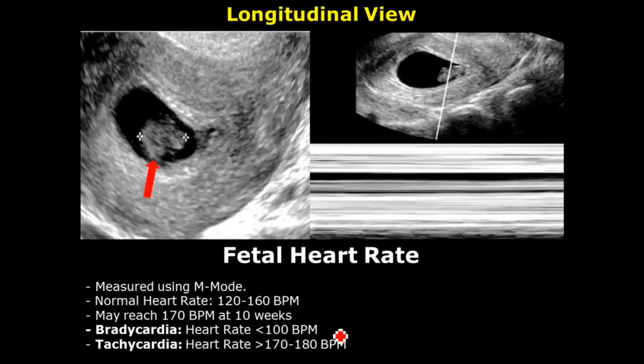Fetal bradycardia occurs when the heart rate is below 100 beats per minute. Fetal tachycardia occurs when the heart rate exceeds 170 to 180 beats per minute. 170 is the borderline range for tachycardia.